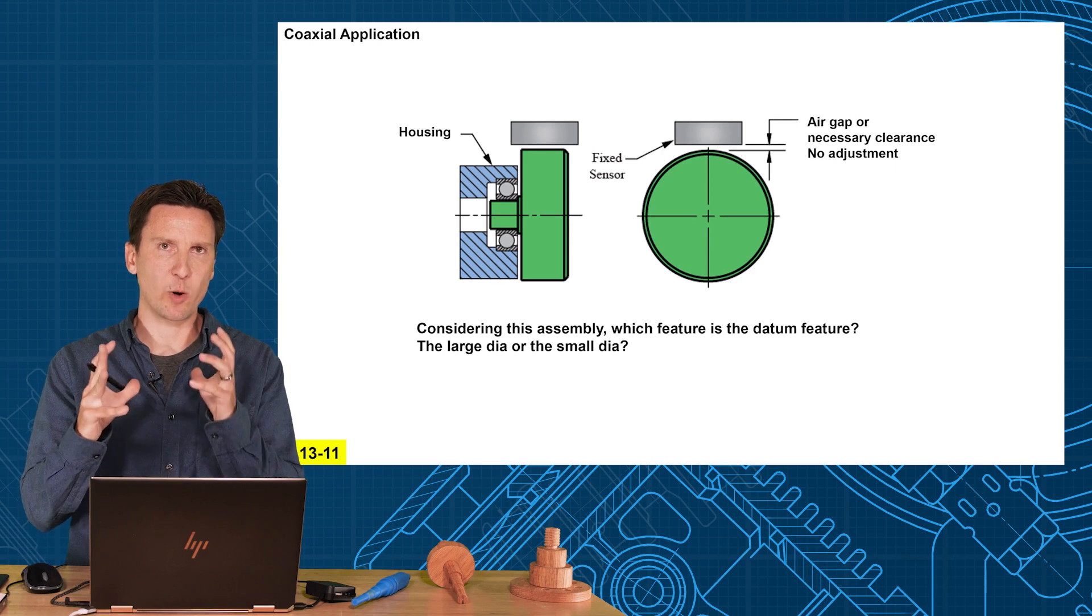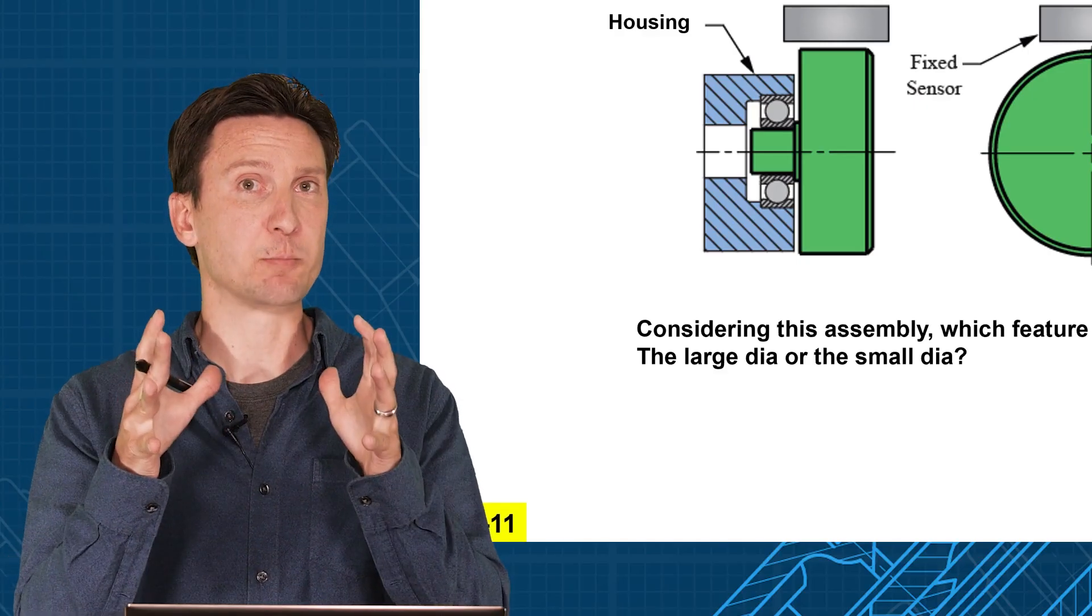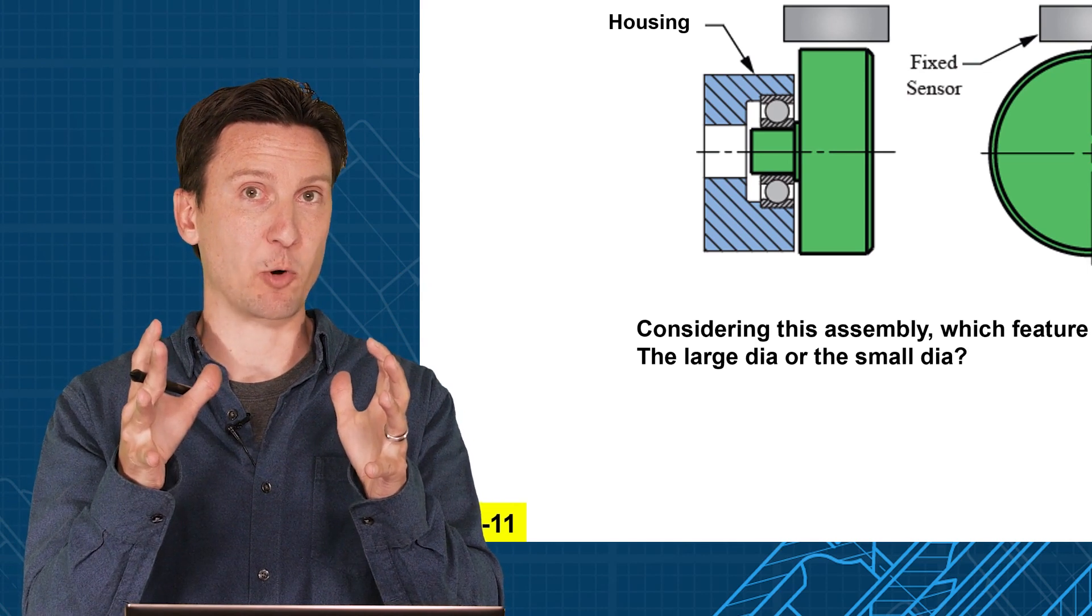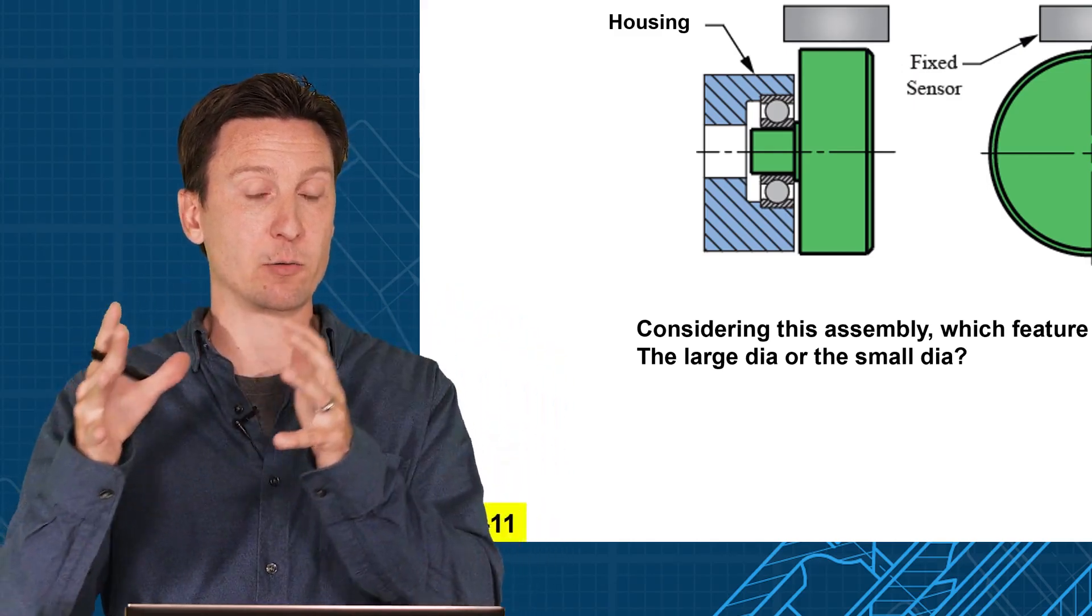Alright, now let's look at an example to compare when you would use runout versus when you would use profile. Remember, the only difference is profile includes the size with its profile tolerance, where runout is going to have a separate size tolerance and then a separate runout.